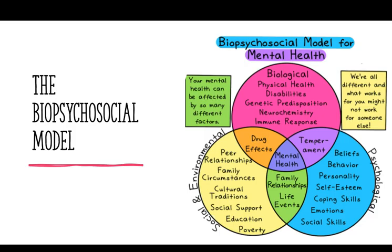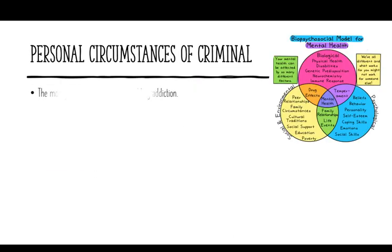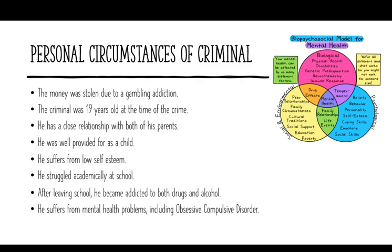So let's revisit our criminal and his personal circumstances. His addiction could be attributed to either the biological or psychological aspect of the biopsychosocial model. A predisposition for addiction has been found to be genetic in some people, but it is also an aspect of mental health, a learned behaviour, and a maladaptive coping strategy. Let's see if you can classify the others — you may wish to pause the video.